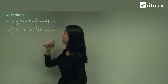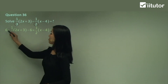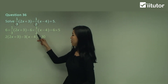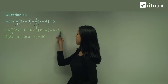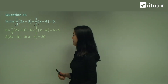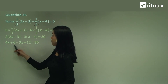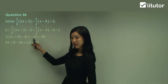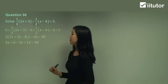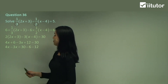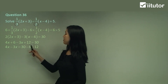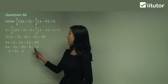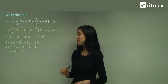Just multiply 6 once for each term. What's 6 divided by 3? That's 2. And 6 divided by 2 — that's 3. And 6 times 5 is 30. Now expand the brackets: 2 times 2x is 4x, 2 times 3 is 6. Negative 3 times x is negative 3x, and negative times negative is positive, so positive 12, equals 30. Get your x's on the left — 4x minus 3x — and move 6 and 12 to the other side. So 4x minus 3x is x, and 30 minus 6 minus 12 is 12. So x = 12.